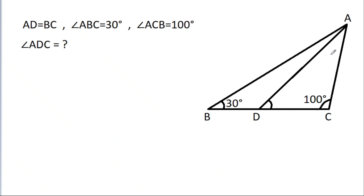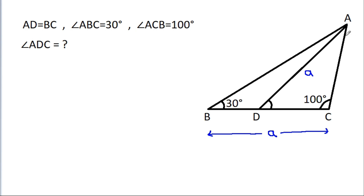In this video, we have been given that AD is equal to BC. So if AD is a, then BC it will be a. Angle ABC is 30 degrees, and angle ACB is 100 degrees. Then we have to find angle ADC.